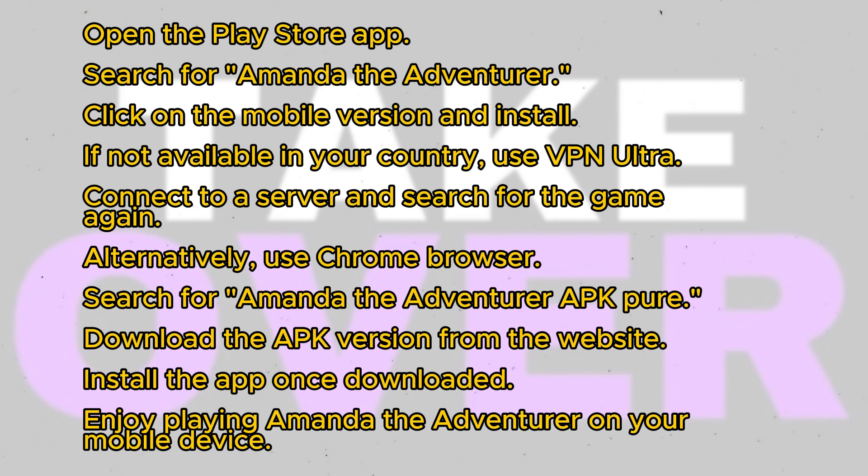Another method is to use your Chrome browser. Open Chrome and search for Amanda the Adventurer APK Pure in the search bar. Click on the first link in the results to visit the website. On the website, click on download APK version and then on download to initiate the download process. Click on download anyway.